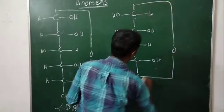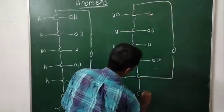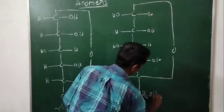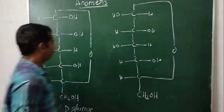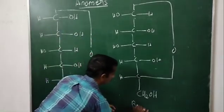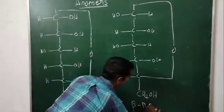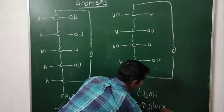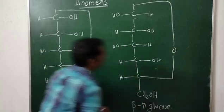And in beta-D-glucose, the OH group is at the left-hand side of the chiral carbon. So this is beta-D-glucose.